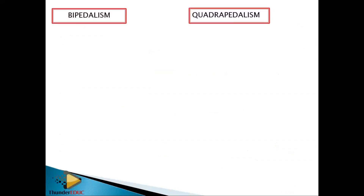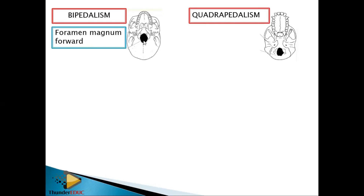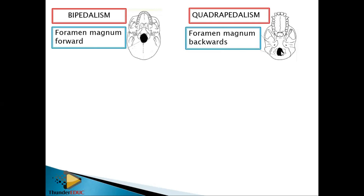Now let's look at the difference between bipedalism and quadrupedalism. If you are walking on two limbs, the foramen magnum is in the forward position — there is a large distance from the front. In quadrupedal organisms, the foramen magnum is in the backward position — the distance is very small, meaning it is positioned at the back. Note: use the word 'backward,' not 'behind.'